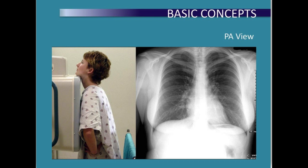The patient's arms are usually raised and resting on a horizontal support. The PA view is the standard view for chest x-rays, useful for evaluating the lung fields, heart size, and bony structures. It provides a natural anatomical perspective and is typically the first view taken during a chest x-ray examination.